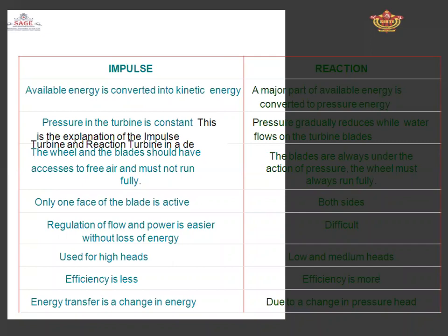In a reaction turbine, the blades are always under excess pressure and the wheel must always run fully. In the case of an impulse turbine, the blades do not run fully submerged with water, and only one side of the blade is active. In a reaction turbine, both sides of the blade are active. The regulation of flow and power is easier without loss of energy in an impulse turbine, whereas in a reaction turbine it is more difficult. Impulse turbines are used for high head applications, while reaction turbines are used for lower heads.